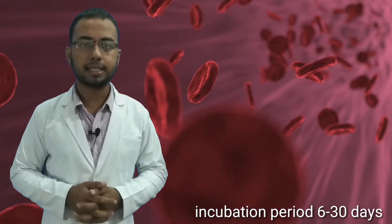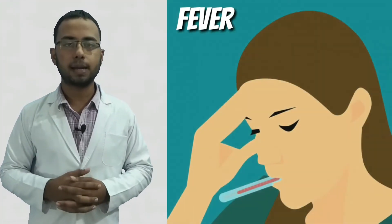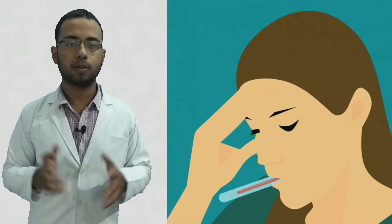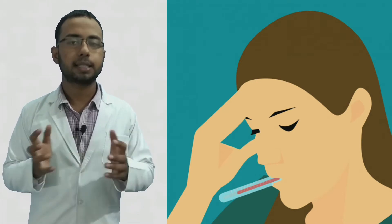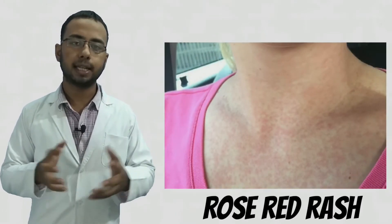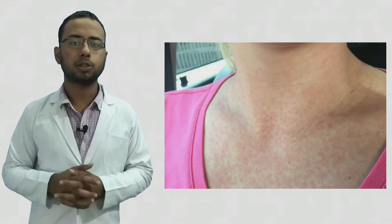Now the symptoms of typhoid. The first symptom that you can easily observe is high fever or high body temperature, which is about 104 Fahrenheit or 39 to 40 degrees Celsius. Secondly, rose-red rashes will come on the chest and abdomen. These will come in certain cases, not in all, but that's also a symptom of typhoid fever.